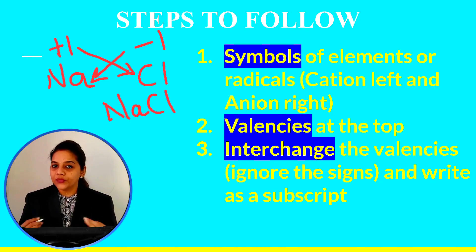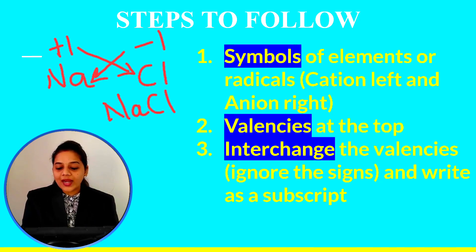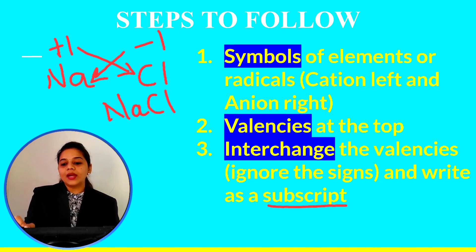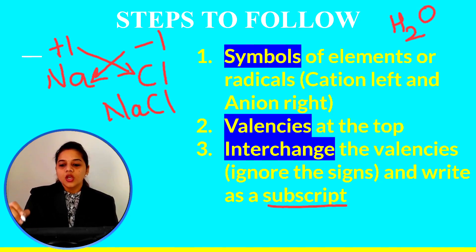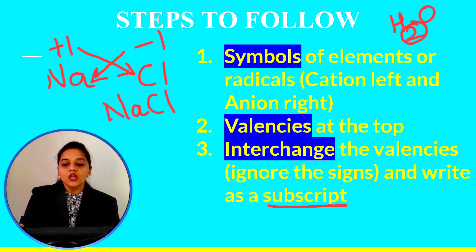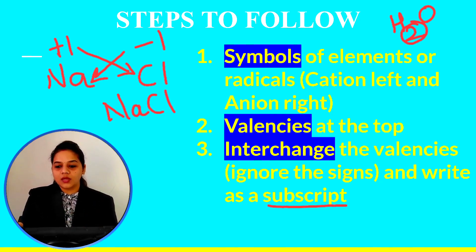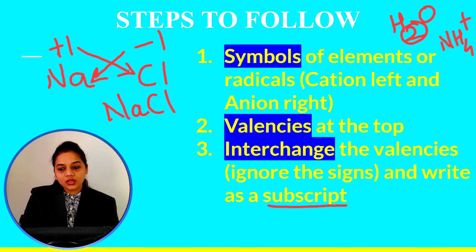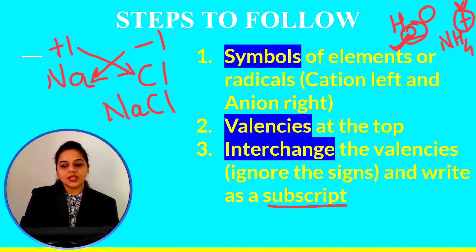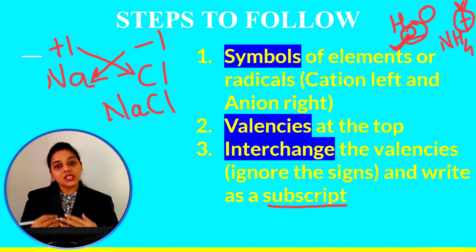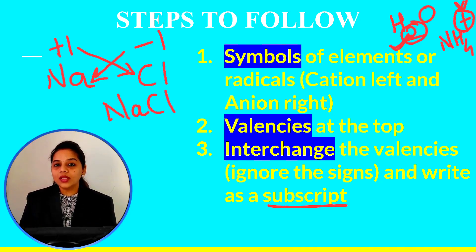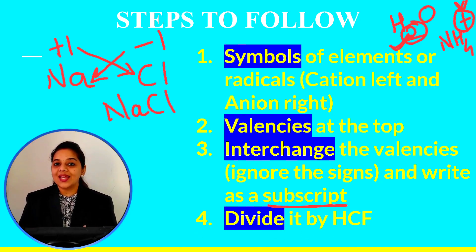You have to write the valency as a subscript. For example, when writing the chemical formula of water, the number written below is called a subscript. A superscript means written as a power — for example, NH4+, where the + is a superscript. So you have to write valencies as subscripts, not as superscripts. The last step is to divide the valency by HCF, that is the highest common factor.